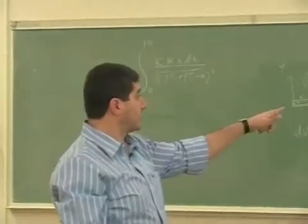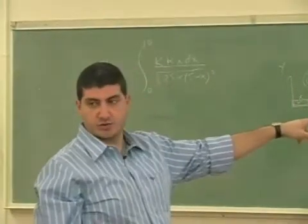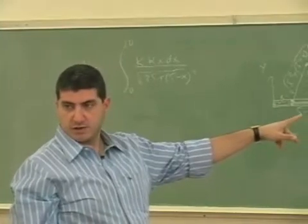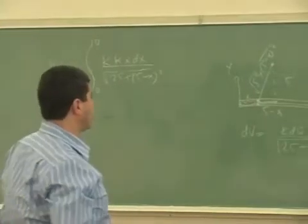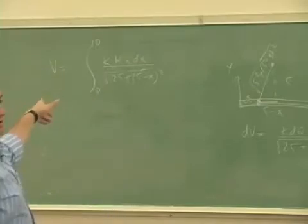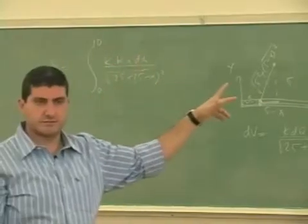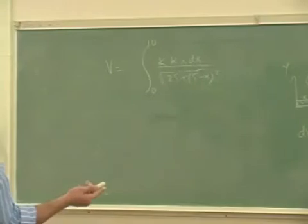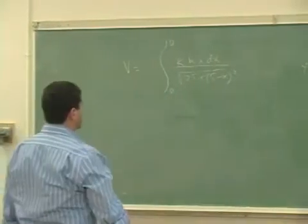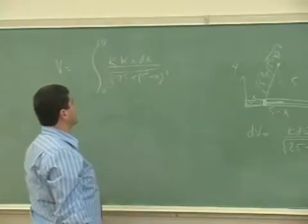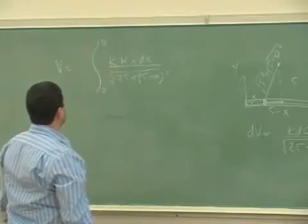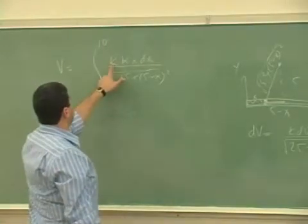If the x was defined from the middle point of the rod, then the limits of the integral would be negative 5 to 5. That's where the limits of integral changes and the distance formula here would change a little bit also. At this point we can factor out the k kappa.